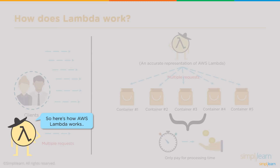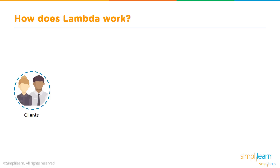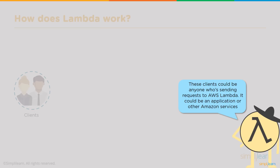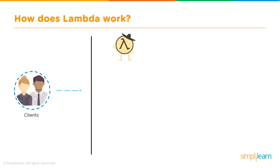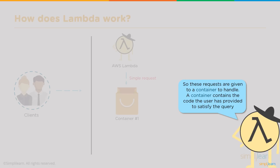Let's look at how Lambda works behind the scenes. Clients send data to Lambda — clients could be anyone sending requests, such as an application or other Amazon Web Services. Lambda receives the request and, depending on the volume of the data, runs on a defined number of containers. For a single or small request, it runs on a single container. The container holds the code the user has provided to satisfy the query.